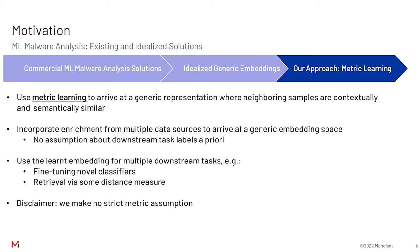The way that we tackle this is via metric learning. We use metric learning to arrive at a generic representation where neighboring samples are contextually and semantically similar. We incorporate enrichment from multiple sources into our metric learning approach. We do not want to make any assumptions about the downstream task labels a priori, yet we want to use the learned embedding for multiple downstream tasks, including retrieval via a distance measure or fine-tuning novel classifiers.